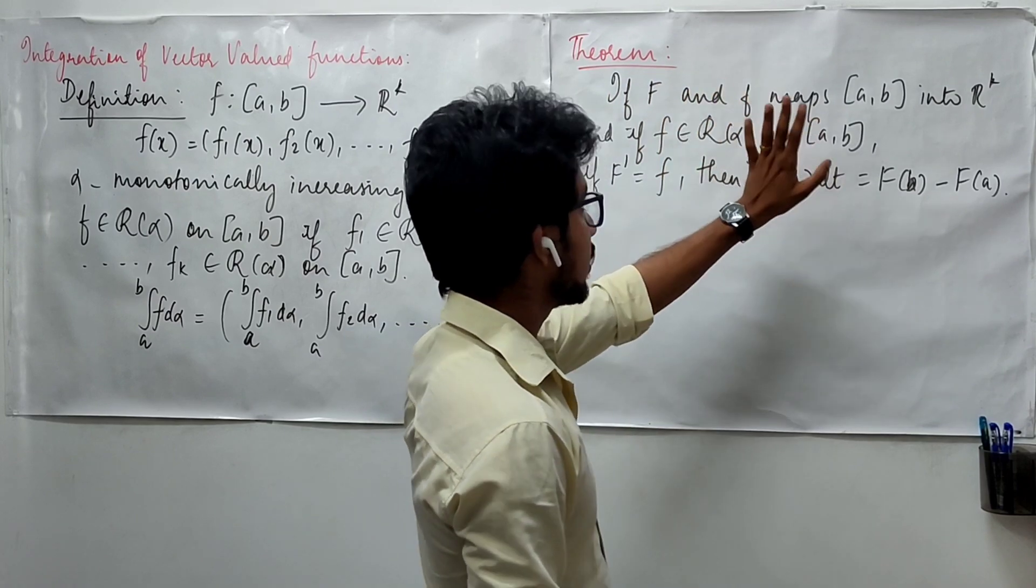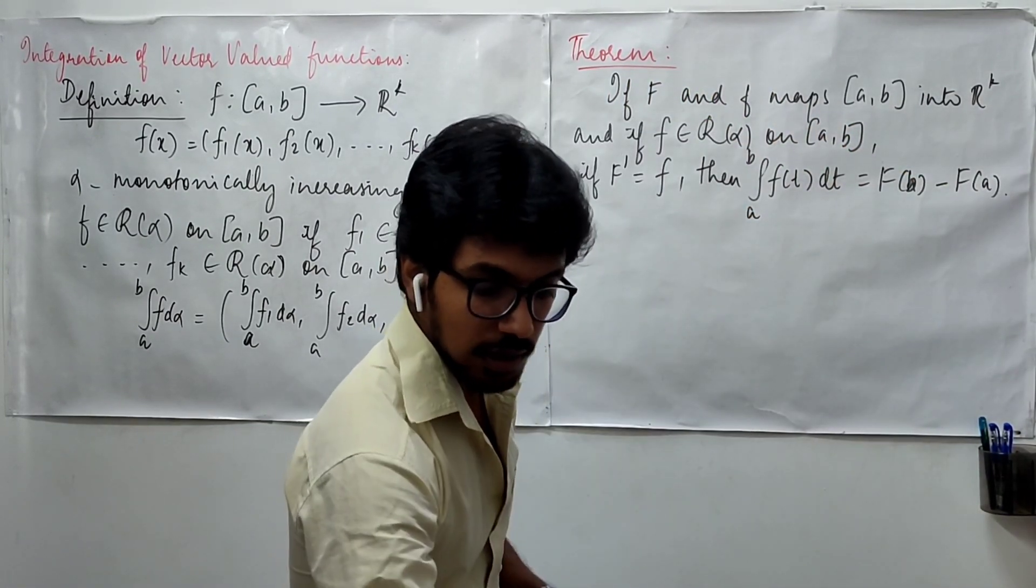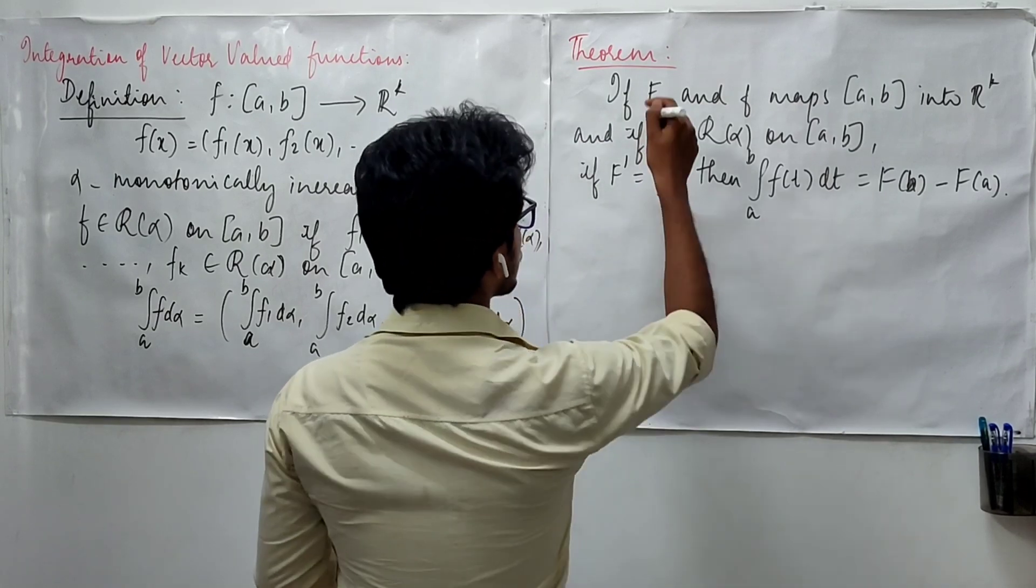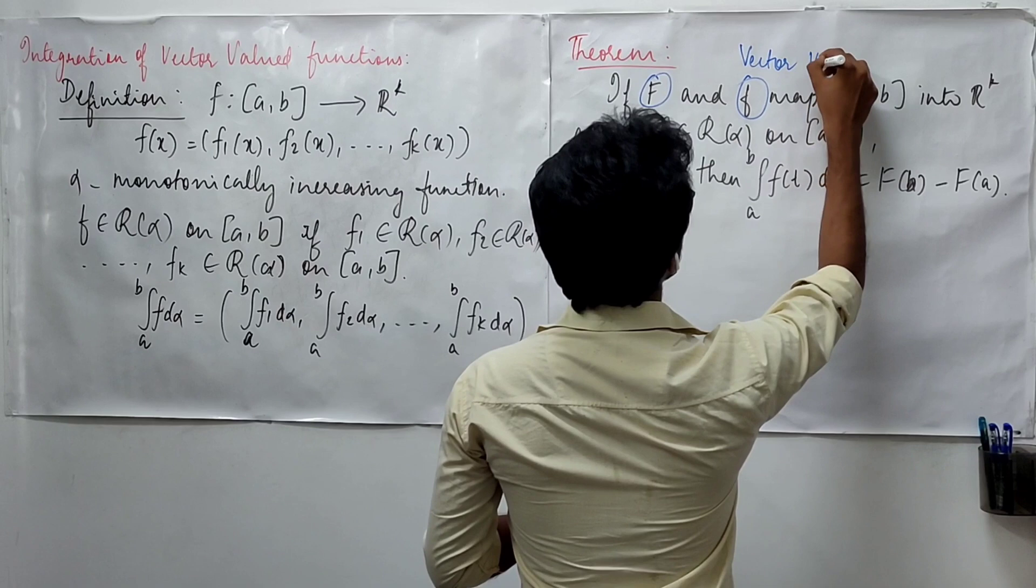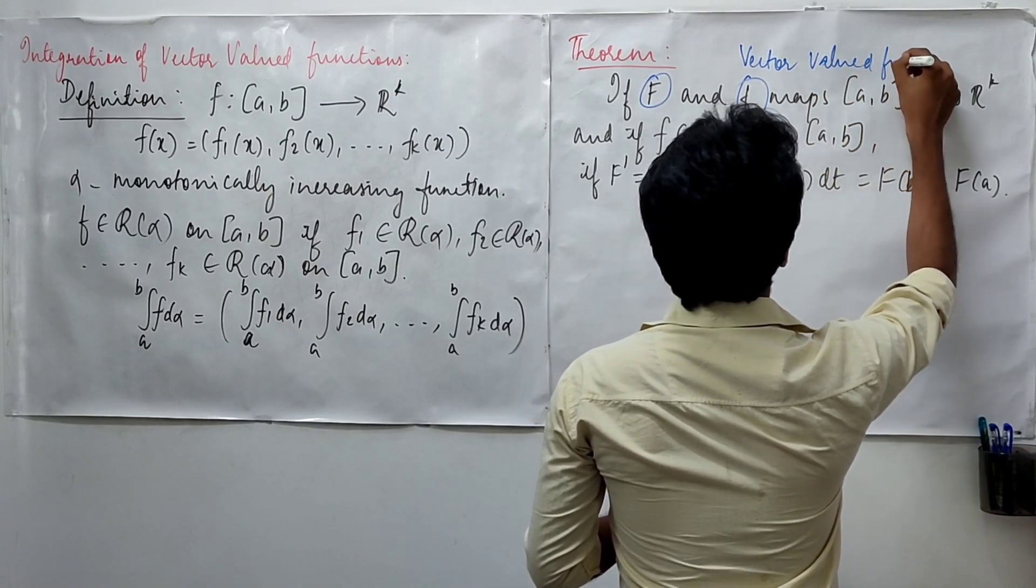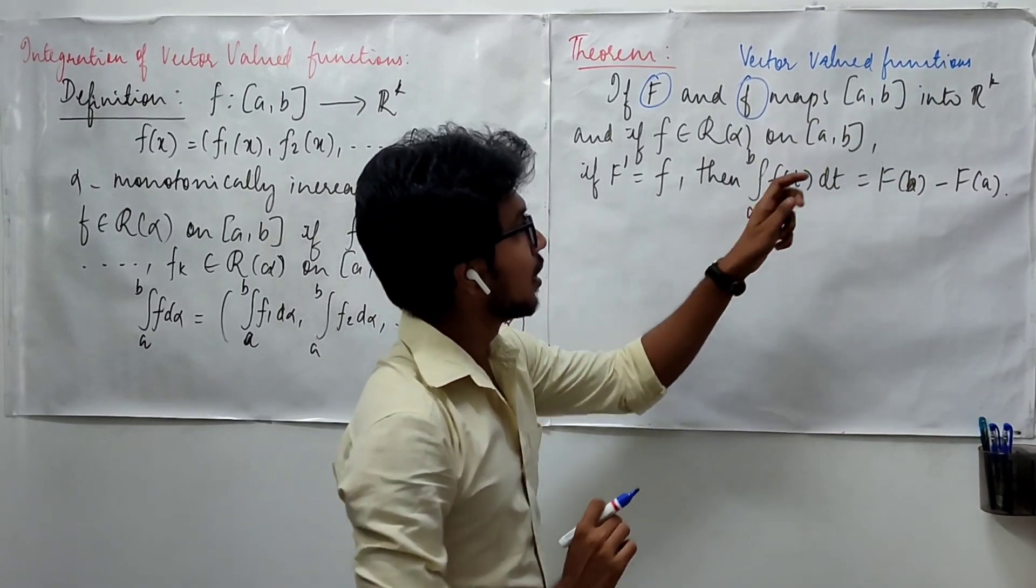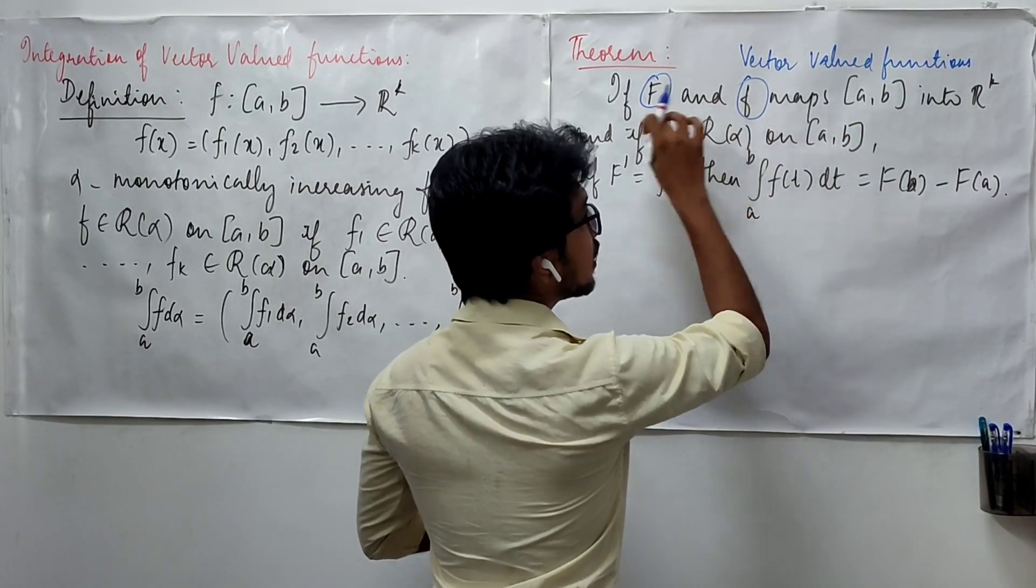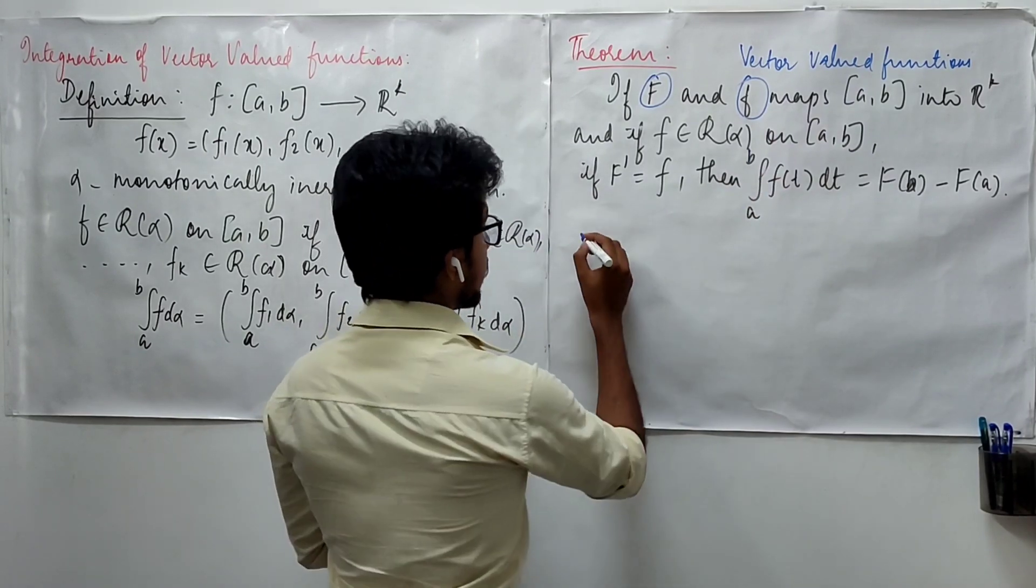See, your f and F map [a,b] into R^k, which means your small f as well as big F both are vector valued functions. When both are vector valued functions, we will have to apply some element in this interval [a,b].